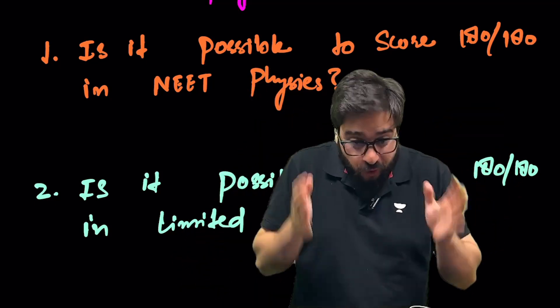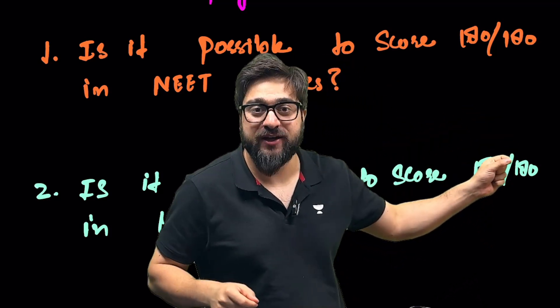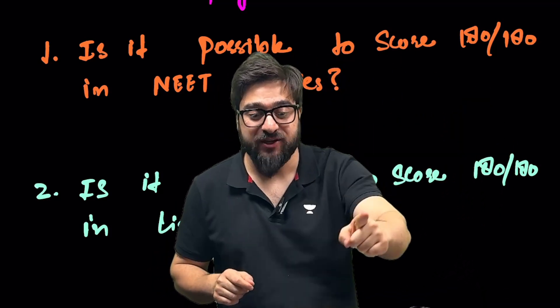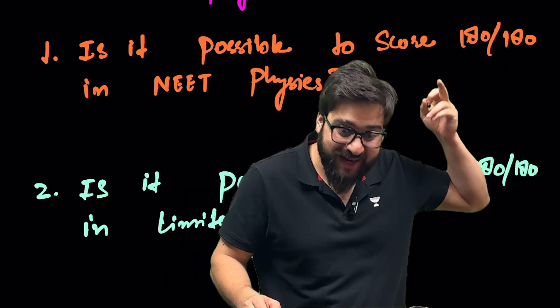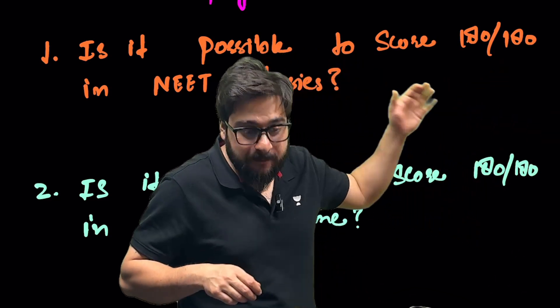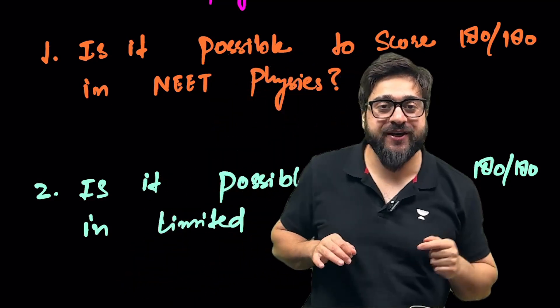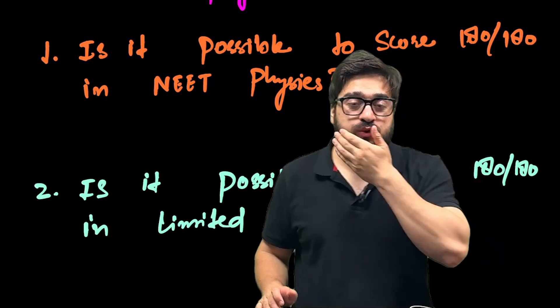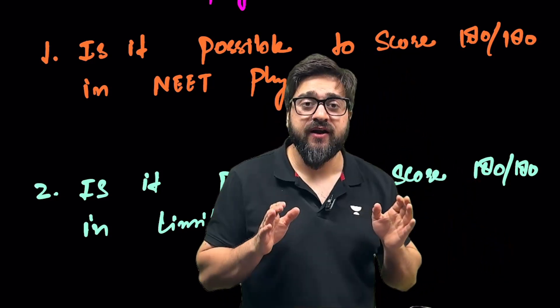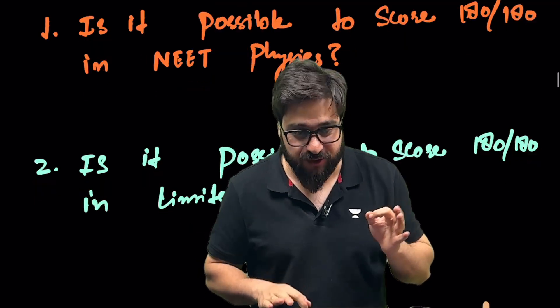I say there is a possibility. And not possibility, we say 67 students in the NEET 2024 have got perfect score, that is 720 out of 720. If they got 720 out of 720 in all three subjects in the whole NEET, why cannot you get 180 out of 180 in the NEET physics? It is very much possible. Students have done it before. So a lot of students have done this and you can also do this.